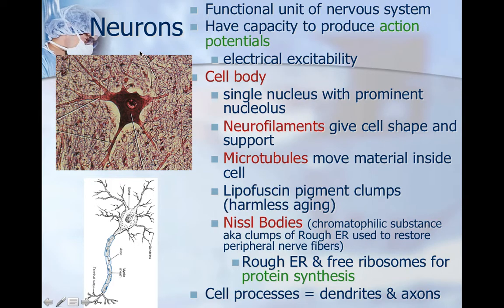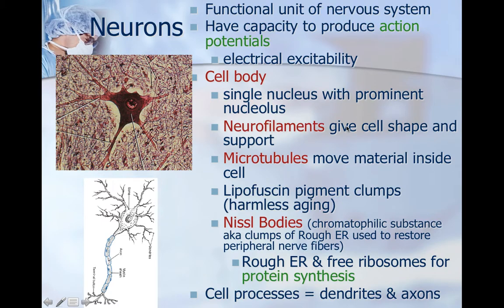Your neurons are the functional units of the nervous system. The next time that we take notes we're going to go into more detail about this, but here's an introduction. They have a capacity to produce an action potential, which means they have electrical excitability. The body of a neuron has a single nucleus with a prominent nucleolus. They have neurofilaments that give the cell shape and support, and microtubules that move material inside the cell.